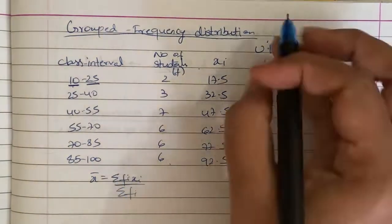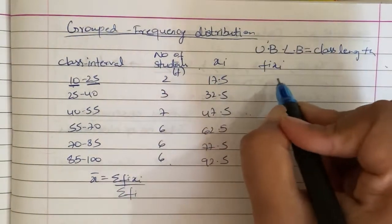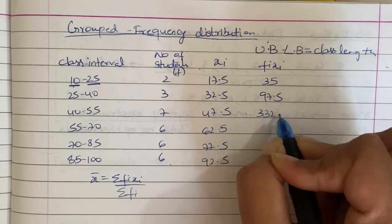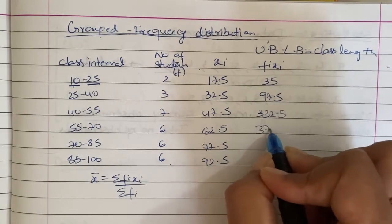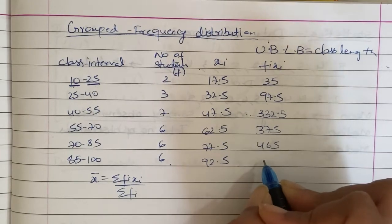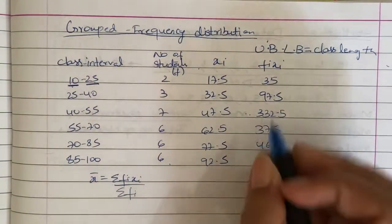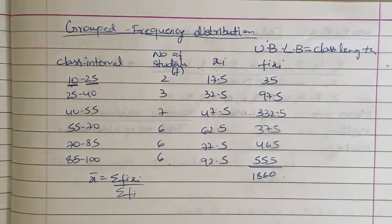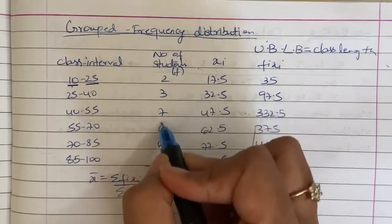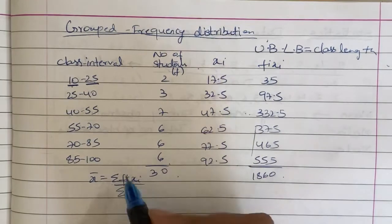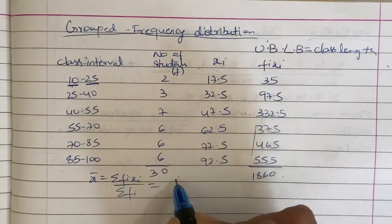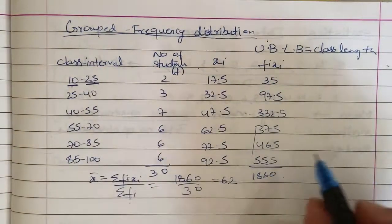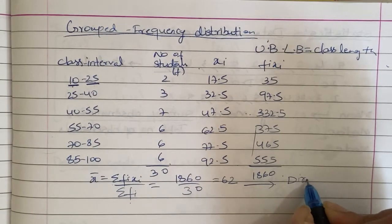Now we will find fi xi. In this case, sigma of fi xi. This into this will multiply. That will be 35, 97.5, 332.5, 375, 465. In this case, this sum is equal to 1860. So 1860. Next, number of students sum, if we do, we will get 30. x bar is sigma of fi xi by sigma of fi, 1860 by 30, which is equal to 62. We will explain the second method. So how do we find mean is the second method?